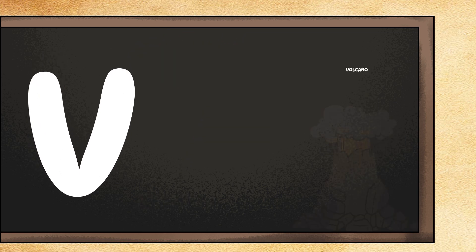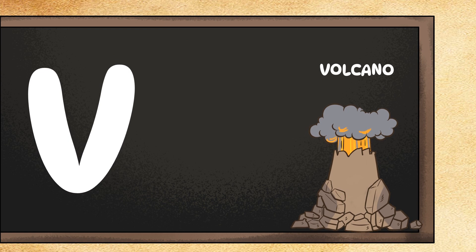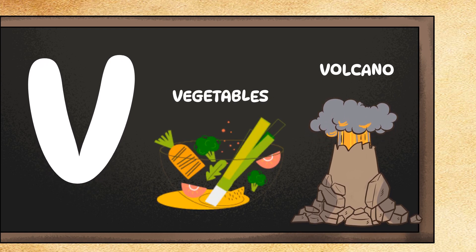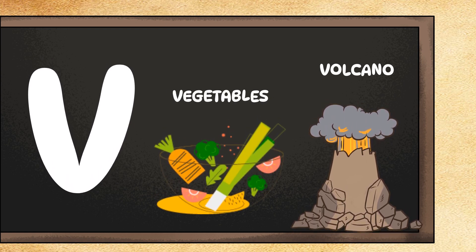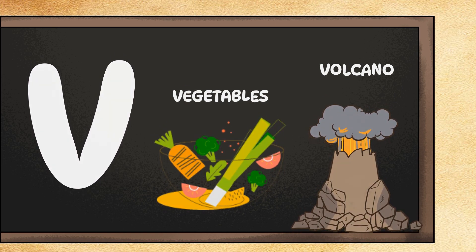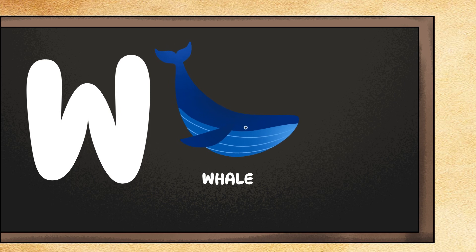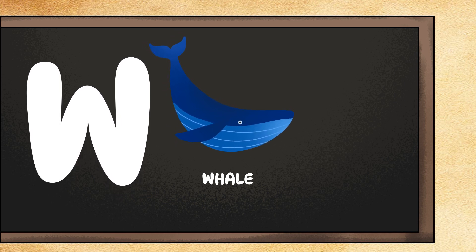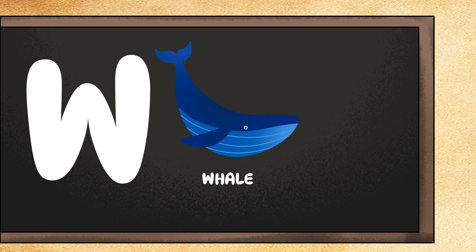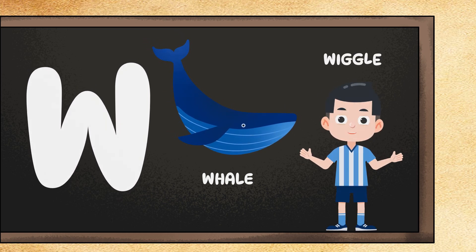V is for volcano. Can you make an exploding volcano with your hands? Boom! V is also for vegetables. Can you pretend to munch on veggies? Crunch crunch! W is for whale. Can you make a big splash like a playful whale? Splish splash! W is also for wiggle. Can you wiggle your whole body? Shake it!